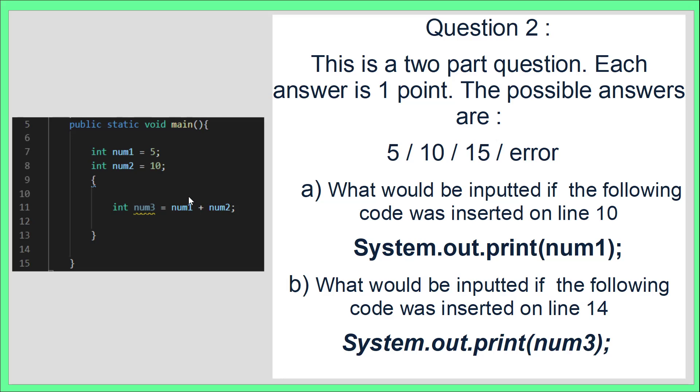Question 2 is testing your knowledge of variable scope. In this piece of code, we have an additional block that adds scope to our main method. This is a two-part question, each worth one point. Here are the possible answers. If you inserted this code on line 10, what would be the output? If you inserted this code on line 14, what would be the output? Pause the video and see if you can answer it.